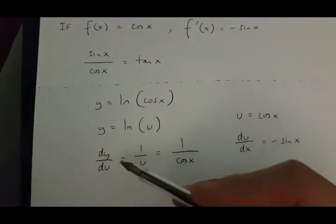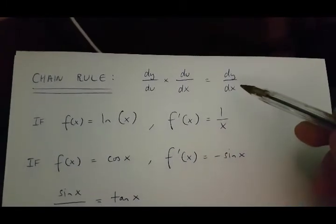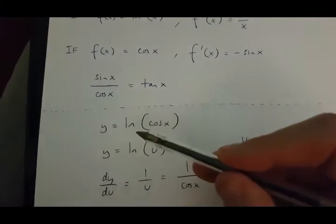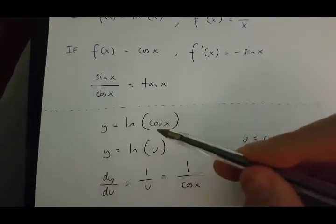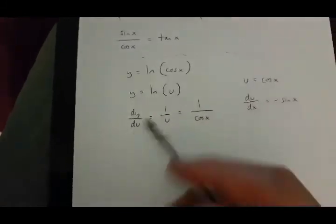Now, using dy over du and du over dx, we can get dy over dx, which is the derivative of y equals ln cos x. This is thanks to the chain rule.